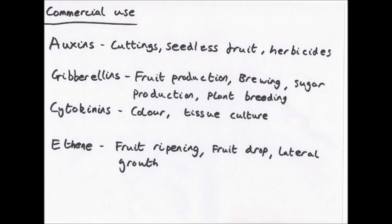Cytokinins are used commercially for colour — they can delay leaf senescence, meaning you don't get that brown-yellow colour and instead maintain a nice green colour. This also means that once produce has been picked, senescence won't occur. Cytokinins are also used in tissue cultures, where they promote bud and shoot growth from small pieces of tissue taken from a parent plant.